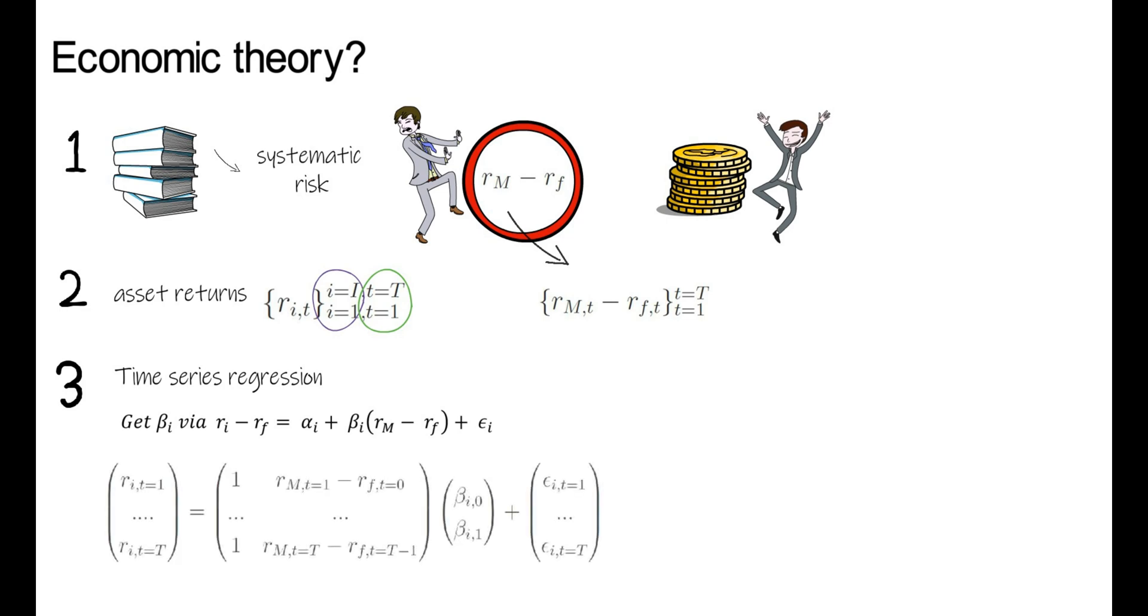Therefore notation-wise, what we do is for all stocks I, element 1 to capital I, we run the following time series regression. We regress the time series of Ri onto a constant and the time series of market excess returns.